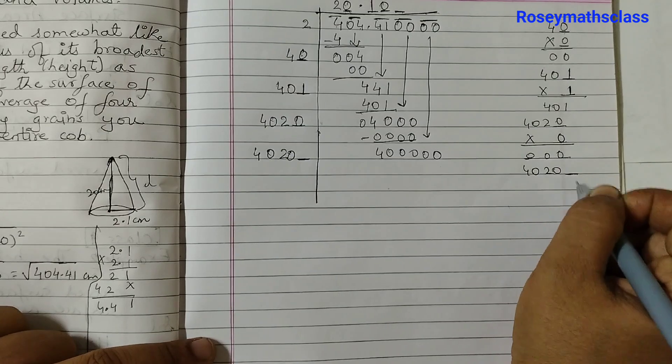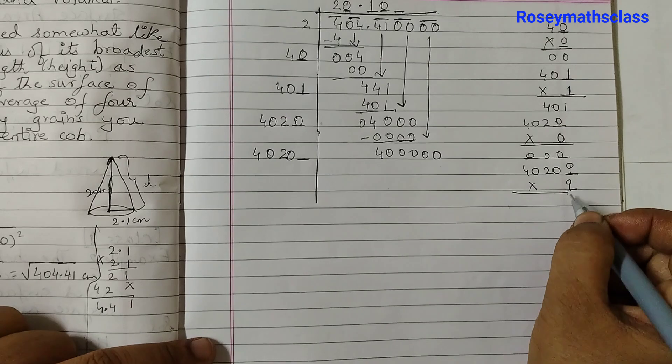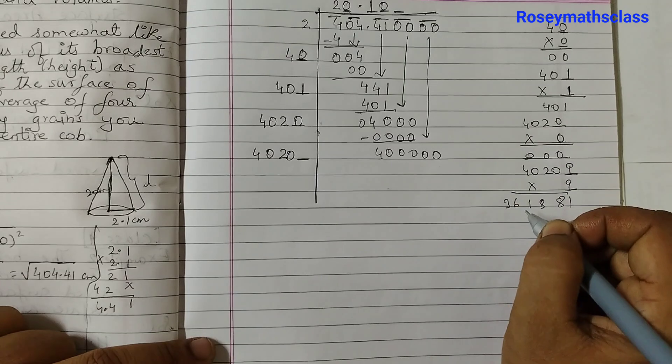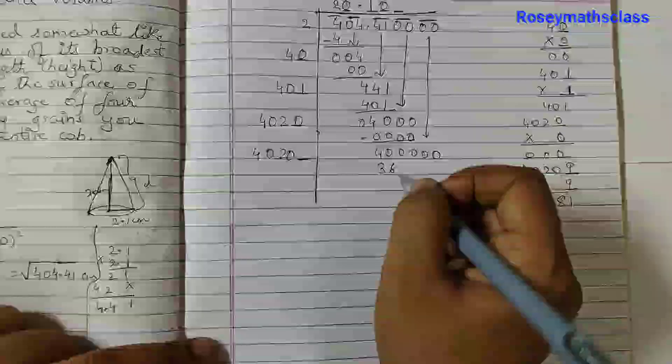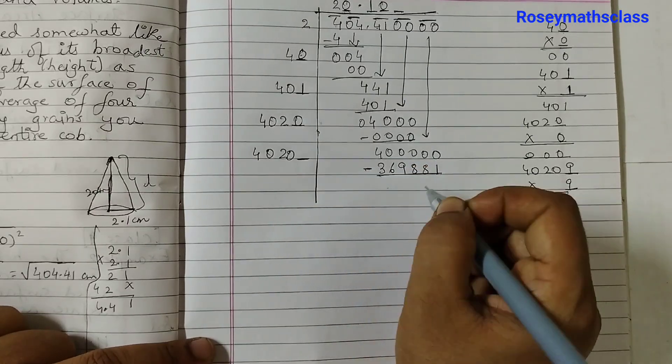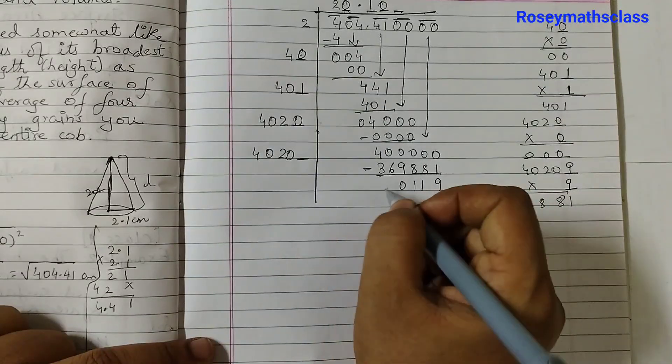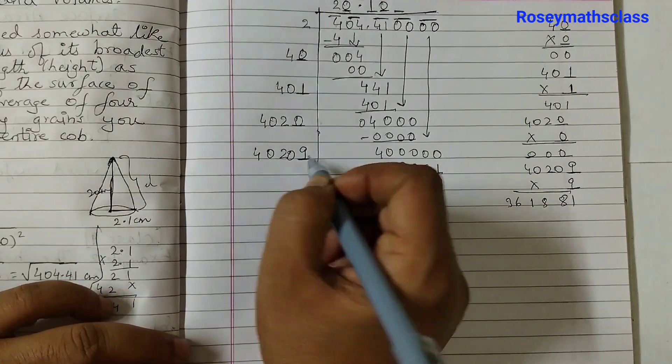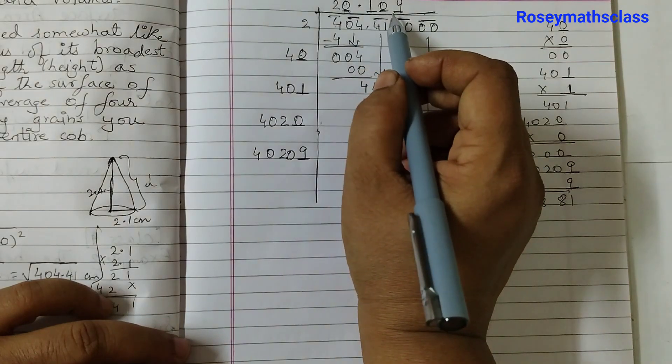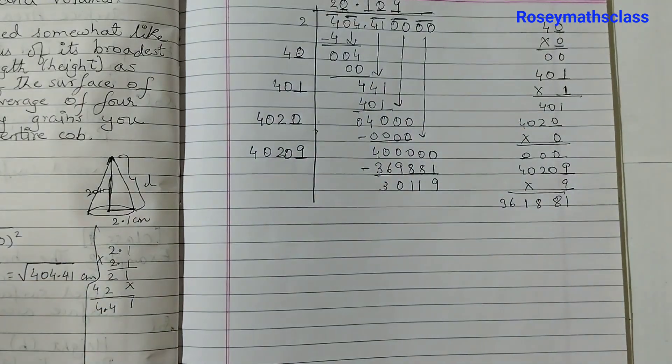4020 in the blank goes 9 and we multiply this 9 times 9, 81, 9, 2 is 18, 1, 9, 4 is 36, 3, 6, 9, 8, 8, 1, subtract, this will be 9, 1, 1, 0, 3. And here we will put 9. So we can go on doing this but we will stop here because we have already got 3 digits after the decimal point so we will just round it off to the second digit.